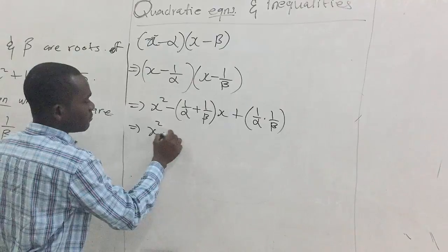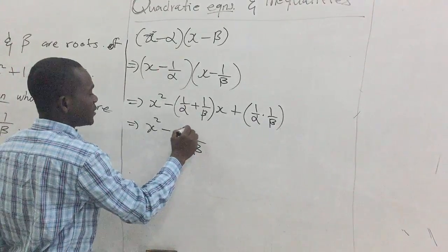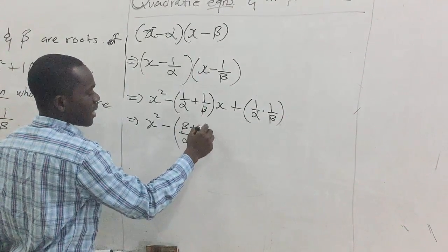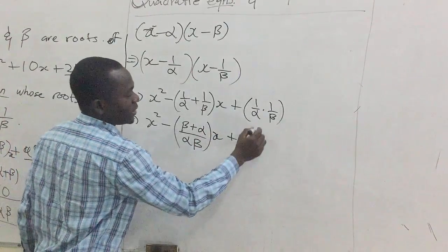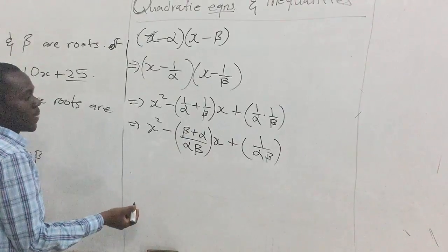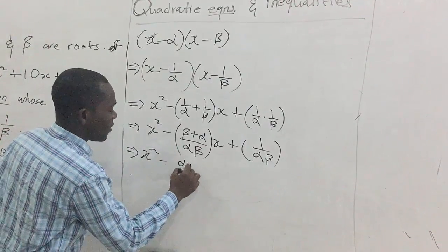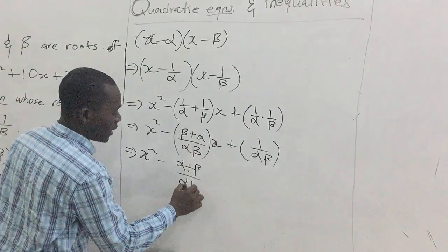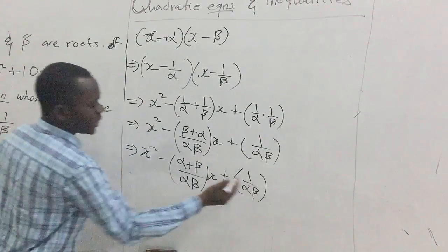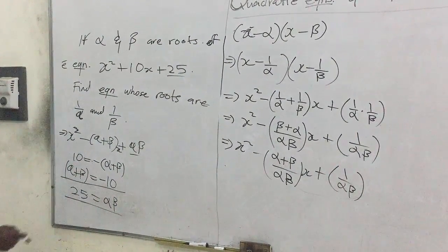Simplifying the sum of new roots using the LCD: one over alpha plus one over beta equals (beta plus alpha) over alpha beta, which is (alpha plus beta) over alpha beta. That gives us x squared minus (alpha plus beta) over alpha beta times x plus one over alpha beta.